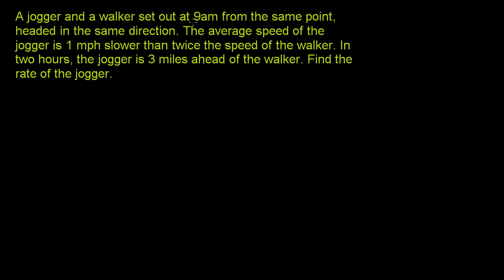A jogger and a walker set out at 9 AM from the same point, headed in the same direction. The average speed of the jogger is 1 mile per hour slower than twice the speed of the walker — that's going to be one equation. In two hours, the jogger is 3 miles ahead of the walker — that's going to be another equation. Find the rate of the jogger.